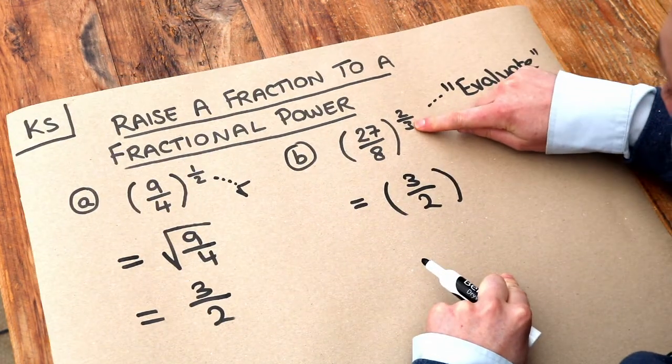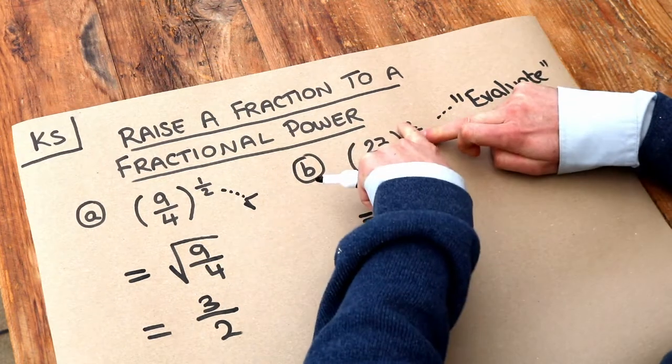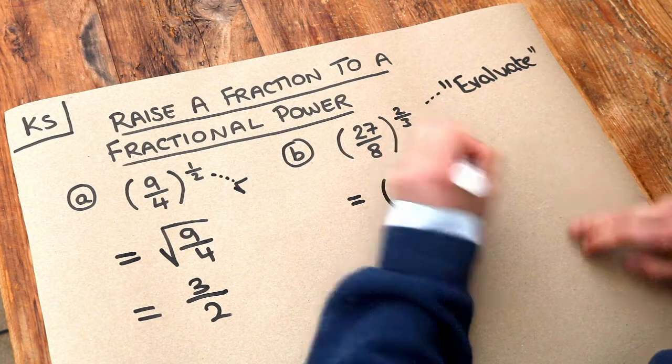So we've dealt with that 3 at the bottom of the fraction. We cube rooted this fraction to get that. But we've still got that 2 at the top of your fractional power, so I'm going to put the 2 there.